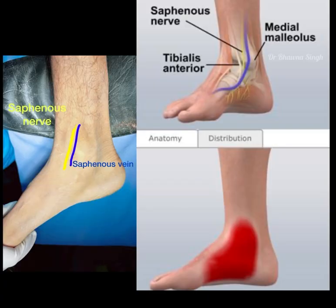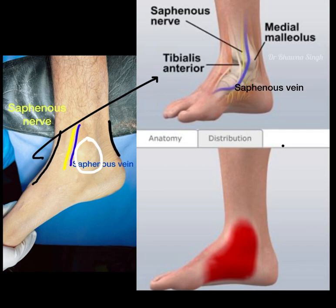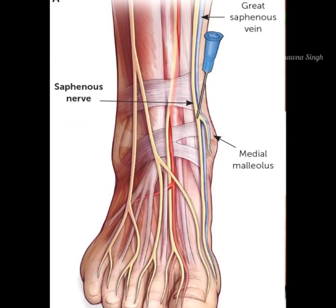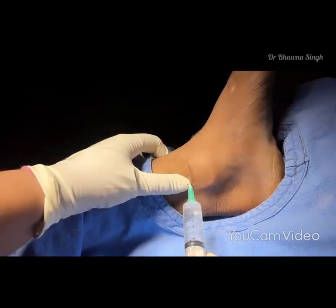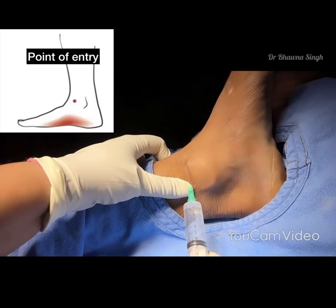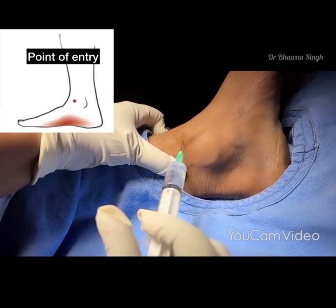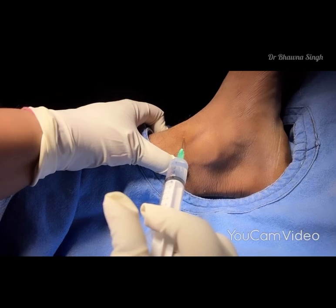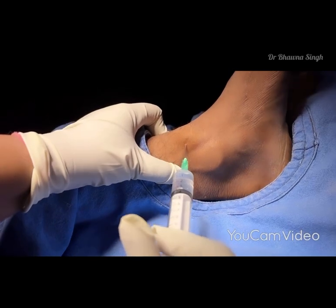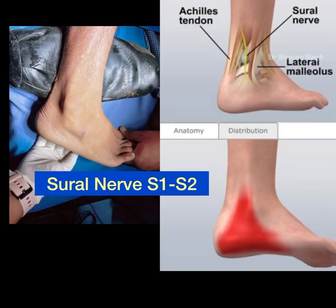The saphenous nerve runs alongside the saphenous vein, in between the medial malleolus and the anterior tibial tendon. Insert the needle in between these two landmarks and make a subcutaneous wheal of two to five milliliters of local anesthetic.